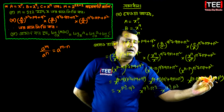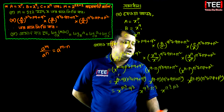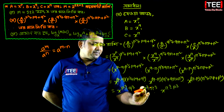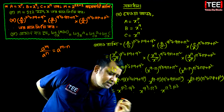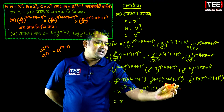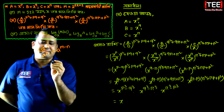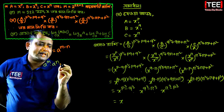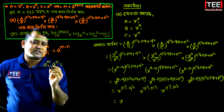We have a cubed minus b cubed as the formula. So we have a r is equal to b r, and a r is equal to b. So we have a squared plus a squared plus a squared. We have a squared plus a squared plus a squared, so we have a squared per m into a squared but a squared.